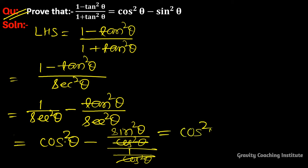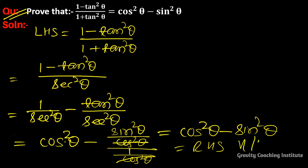So this is equal to cos²θ - sin²θ, which is equal to RHS. Hence proved.